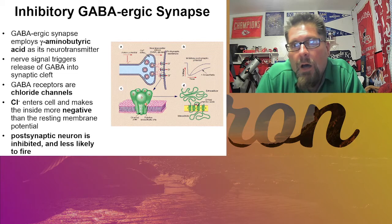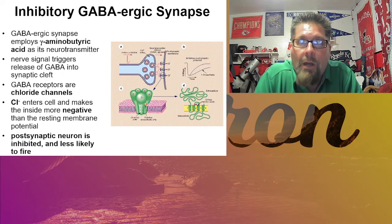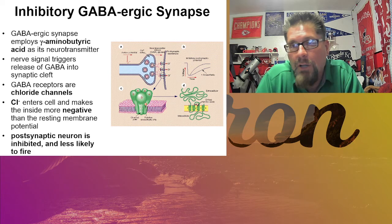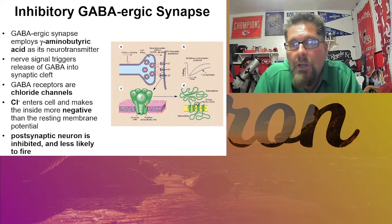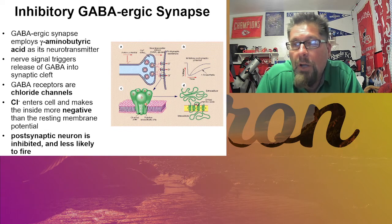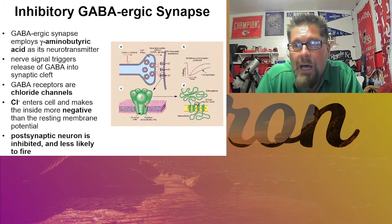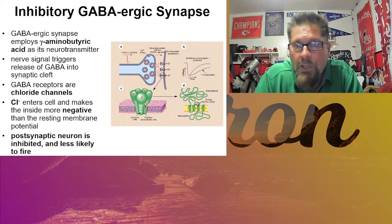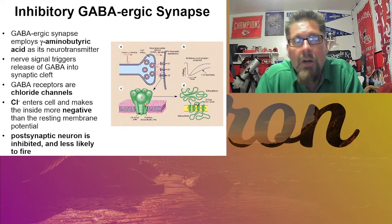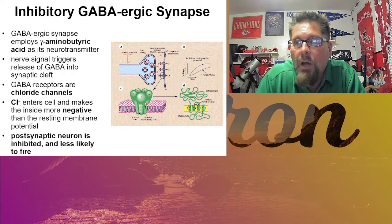The GABAergic synapse is inhibitory — something that's going to be slowing down the process. The difference with GABA is that its receptors are chloride channels. Chloride is a negative anion, so when it's released and taken up by the next neuron, it's going to lower the energy level even lower than the negative 70mV resting potential we've spoken about. That's how it inhibits the next neuron — by making the membrane potential even lower than resting, essentially putting it to sleep.